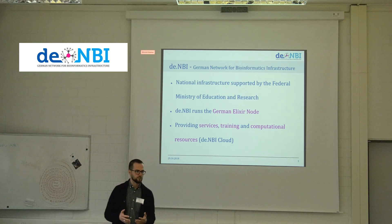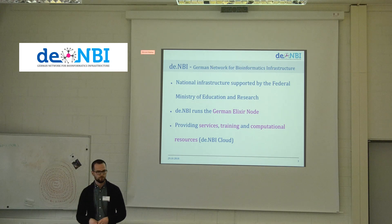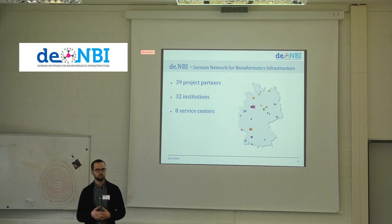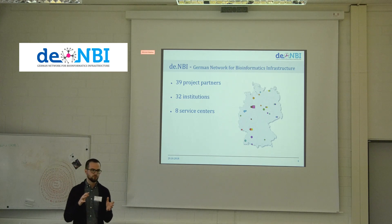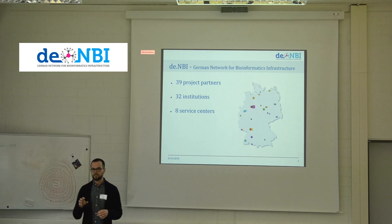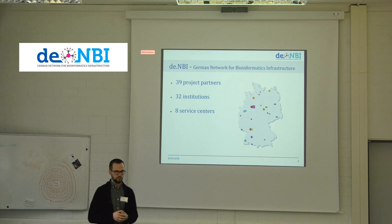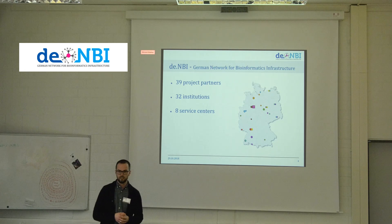In de.NBI we provide first-class bioinformatics resources and services. We also offer training in Germany and Europe through a wide range of courses and workshops, and we offer the de.NBI Cloud as a computational resource. The network consists of 32 institutions organized in 8 service centers, each with its own focus on a specific research topic — such as RNA bioinformatics, human bioinformatics, plant bioinformatics, microbial bioinformatics, and cloud computing services.